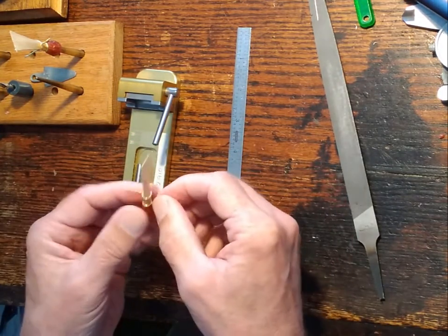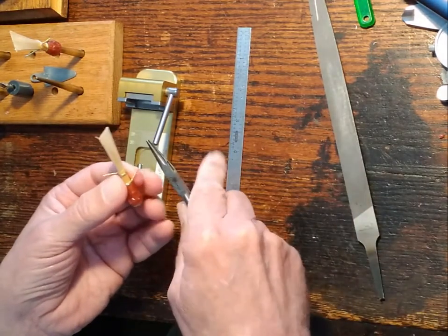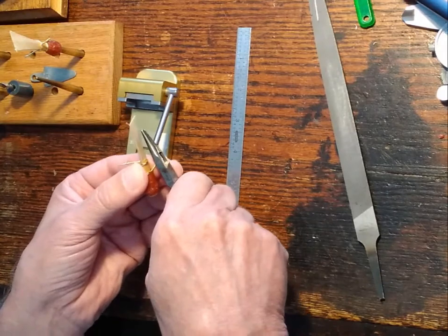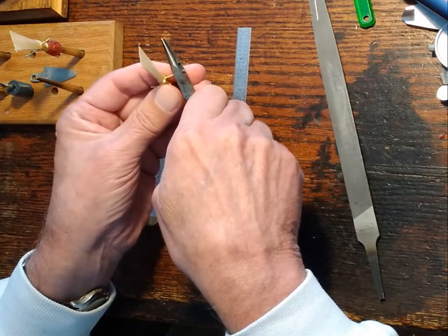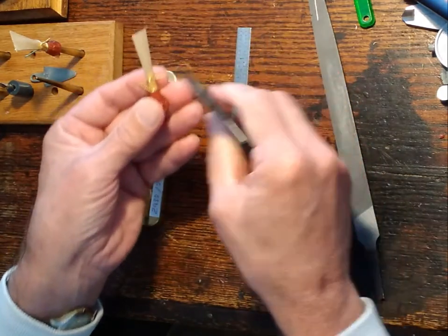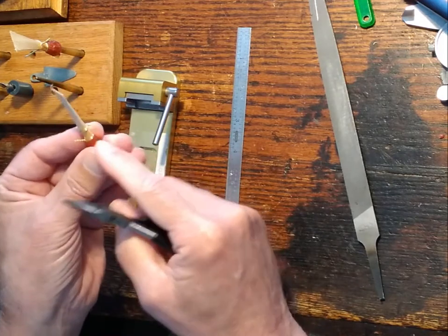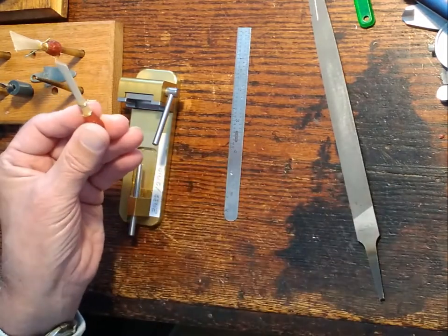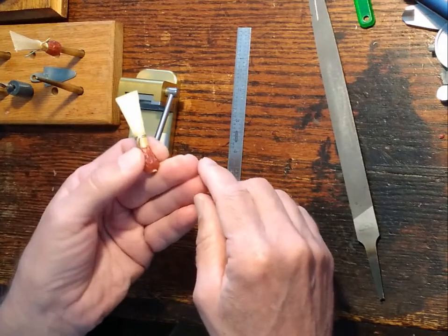My wires here are a little bit long, so I'm going to clip them off just so that I don't stab myself quite so much. I'm leaving these a little bit long because I like to form these wires so that I can tell which way my reed ought to go up and down. I'll talk about that sometime later.